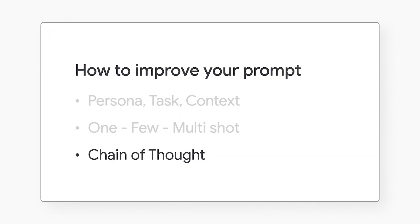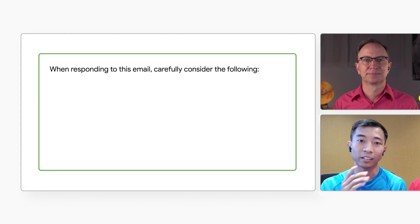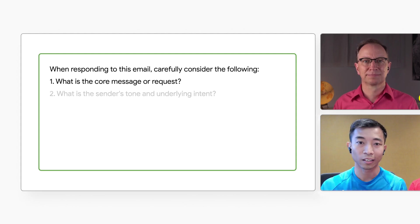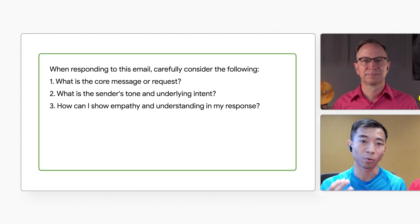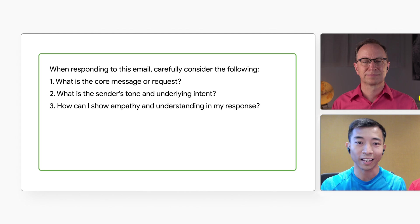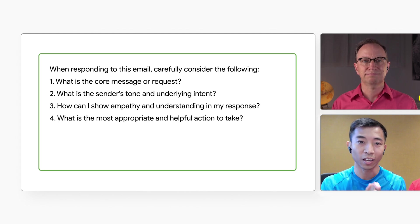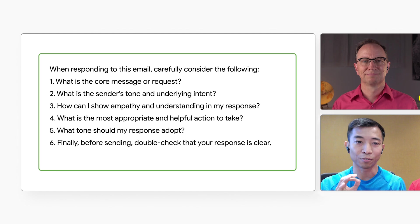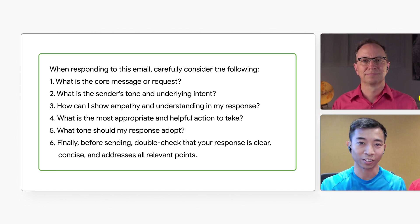The last item on your list was chain of thought. I've heard that term before, but I don't know what it means. Typically, when you're training a new coworker in a task, it often helps to divide the work into steps. LLMs can also use the same kind of support to improve their accuracy. Here's one way of doing it: you tell the LLM to think about the customer's core request, their tone, and how to show empathy with them when responding. After getting a better understanding of the customer, let the LLM decide on the most helpful action to take and what tone to adopt. Finally, you're telling the LLM to check for clarity in its response.